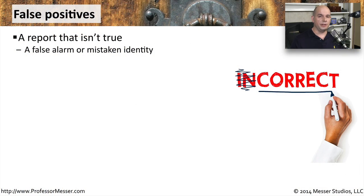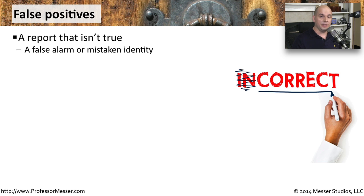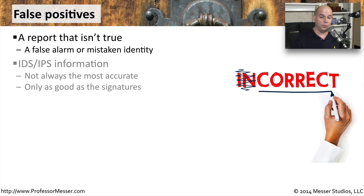A false positive is when you receive an alert from a security device telling you that there was a problem. The issue is that the security device is actually incorrect. This is a positive, but it's a false positive, which means there wasn't really a problem to begin with.